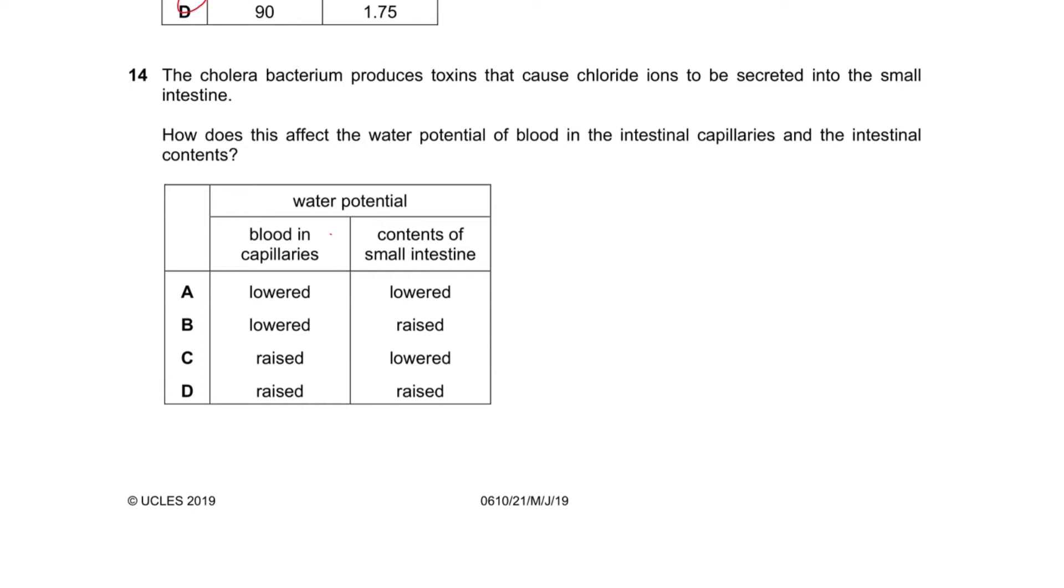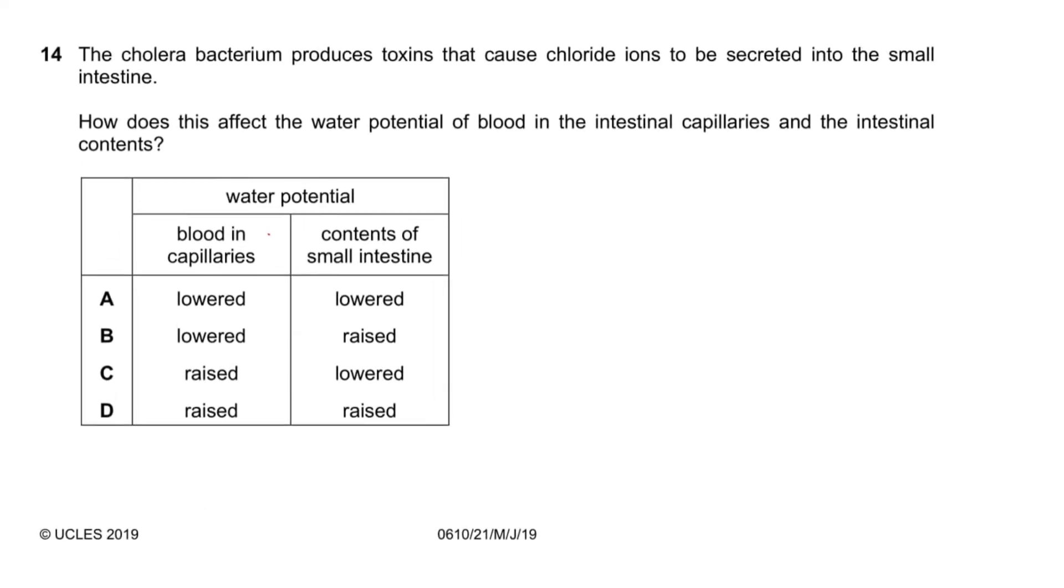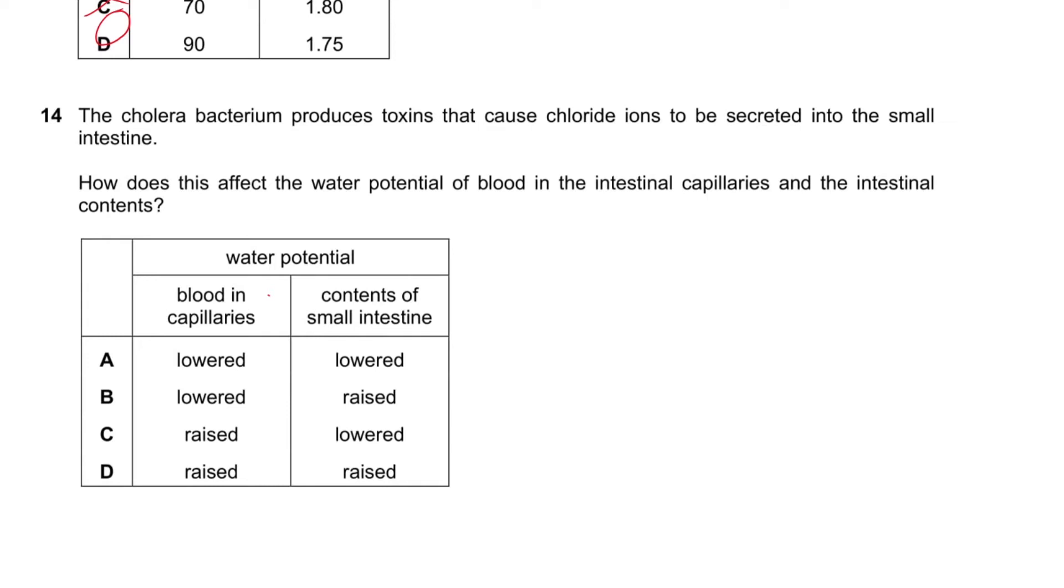Question number 14 says the cholera bacteria produces toxins that cause chloride ions to be secreted into the small intestine. So here's our small intestine, it causes chloride ions to be secreted. How does this affect the water potential of blood in the intestinal capillaries and the intestinal contents? Since there's a lot of ions here, the water potential decreases because there's more ions so there's less water. And then outside will be higher. Blood in capillaries will be raised, it's one of these. And then contents of small intestine will be lowered, so A.